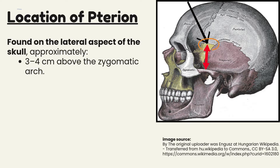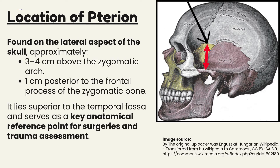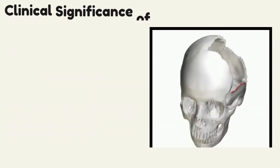The pterion is found on the lateral aspect of the skull, approximately three to four centimeters above the zygomatic arch, and one centimeter posterior to the frontal process of the zygomatic bone. It lies superior to the temporal fossa and serves as a key anatomical reference point for surgeries and for trauma assessment.